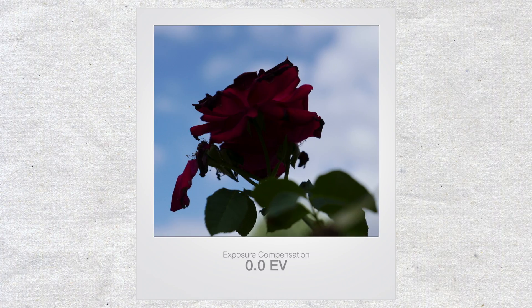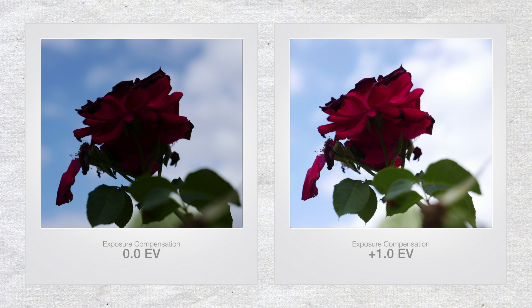Here are a couple of examples where I used exposure compensation to get the desired outcome. The first picture was shot on the multi-metering mode — you can see that the rose is horribly underexposed. I didn't want to bother going through the settings to switch my metering mode, so instead I set my EC to plus one, and in the next shot you can see the rose gets the correct exposure.